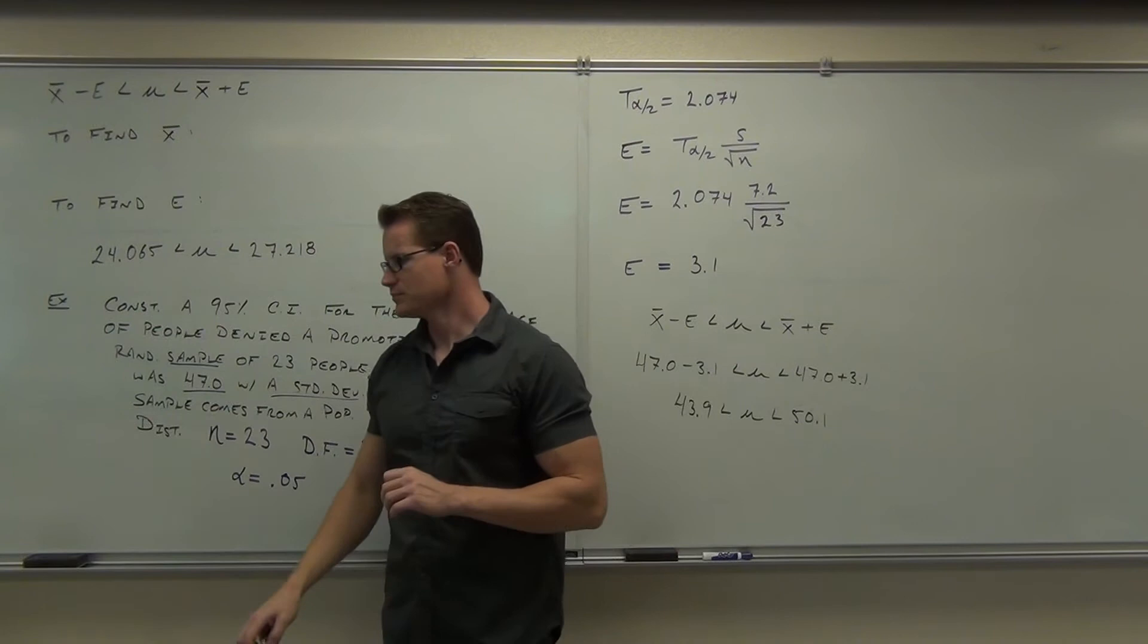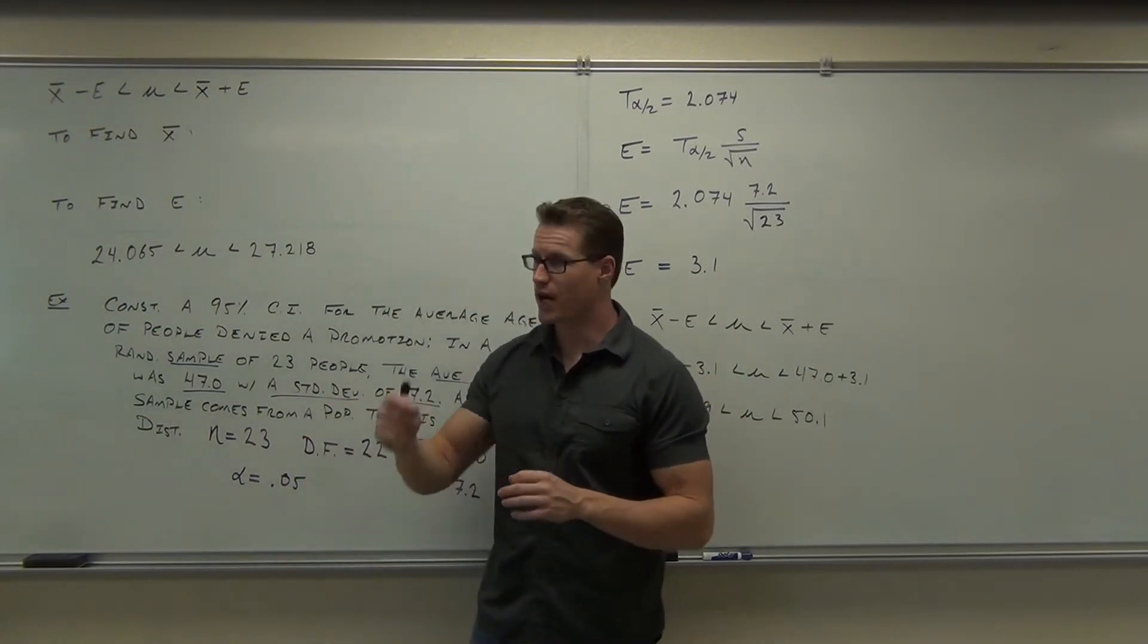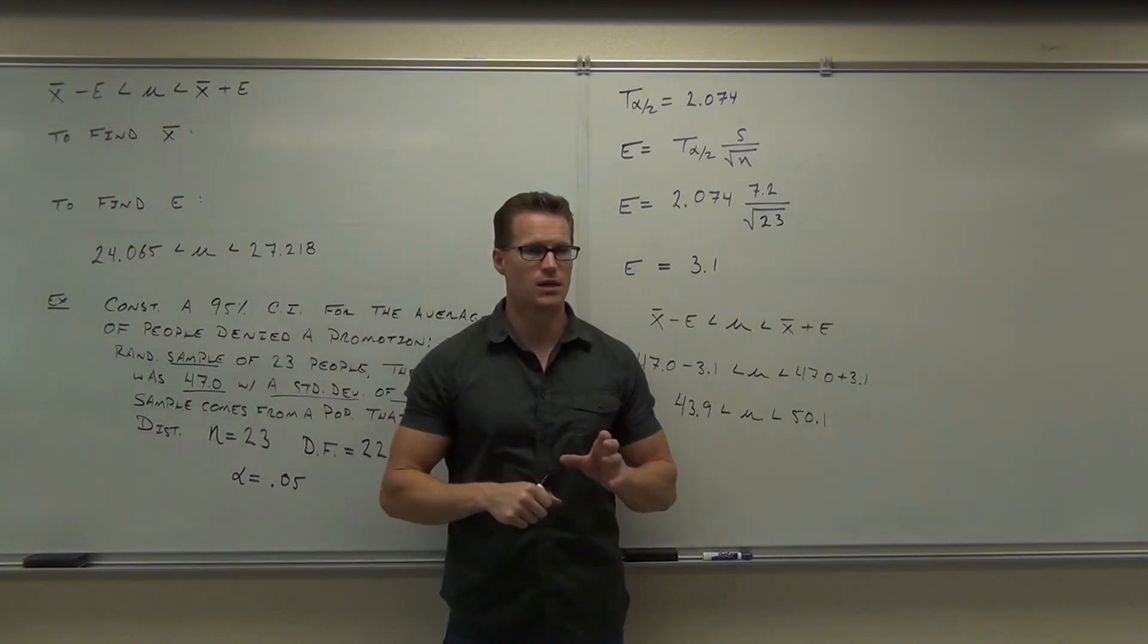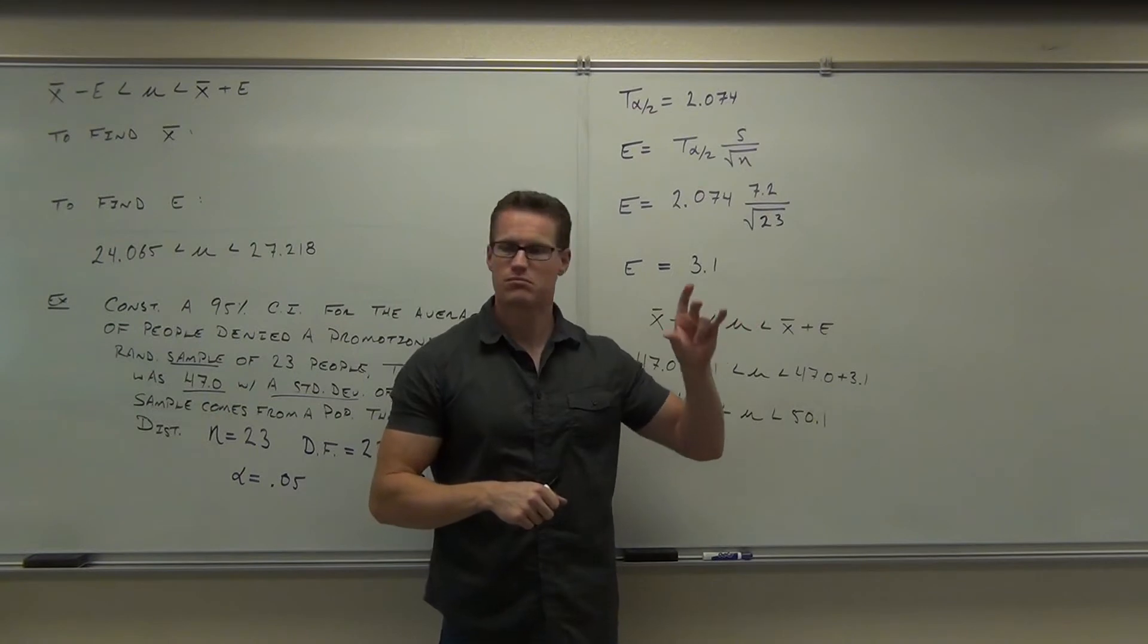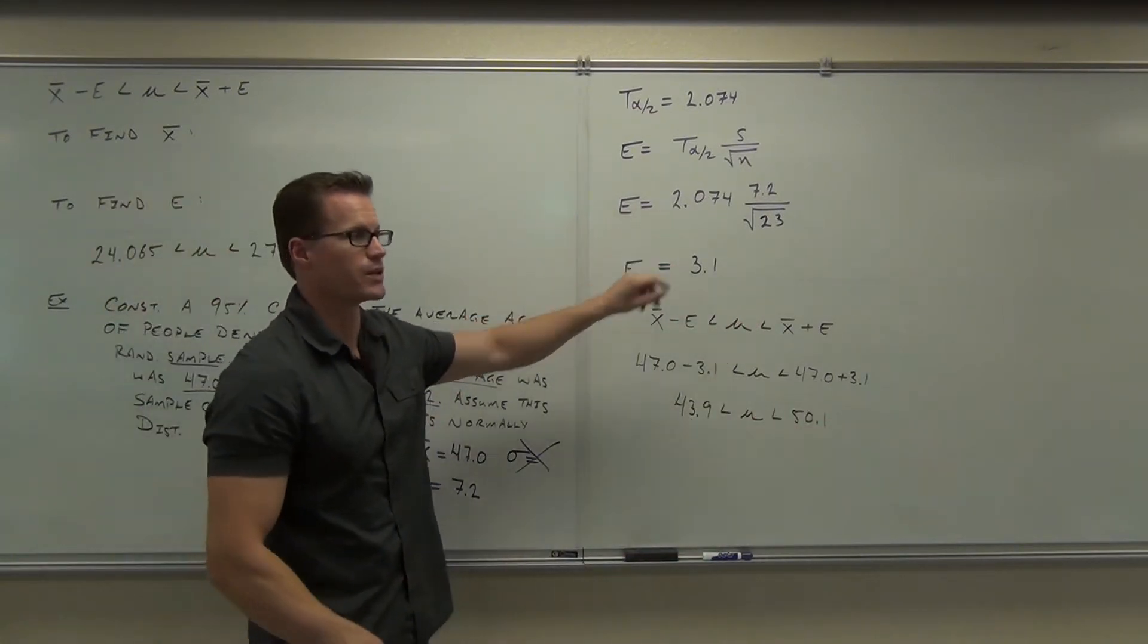Good deal. Very similar to before. Only difference is that T. That T's crucial, though. You've got to know when to use it. If you have the sigma, perfect, you've got Z. If you don't have the sigma, you've got S, you've got T. Computation's exactly the same. Finding the numbers are a little bit different.